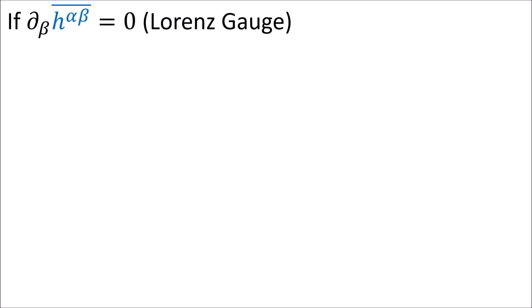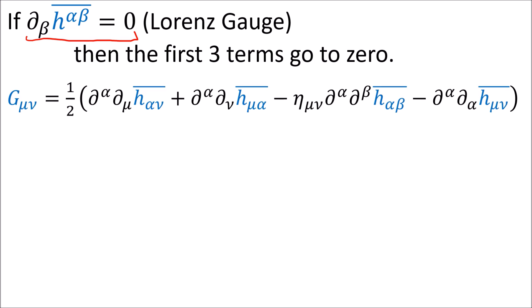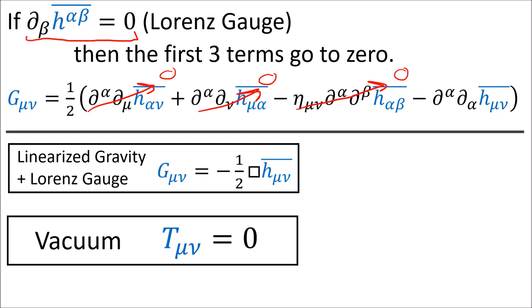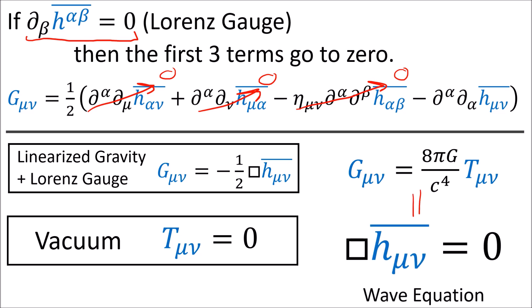Then we introduced the Lorentz gauge, which is a family of coordinate systems that meet the condition where the derivative of h-bar is zero. In the Lorentz gauge, the first three terms on the left side of the Einstein field equations go to zero. And if we take the case of a vacuum where the energy-momentum tensor is zero, the Einstein field equations reduce to a wave equation for h-bar.